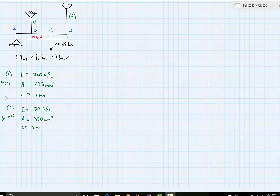We're given some information about the cables at 1 and 2. Cable 1 is a steel cable with Young's modulus of 200 gigapascals, area of 625 millimeters squared, and a total length of 1 meter. The second cable is bronze with Young's modulus of 80 gigapascals, area of 350 millimeters squared, and a total length of 2 meters.